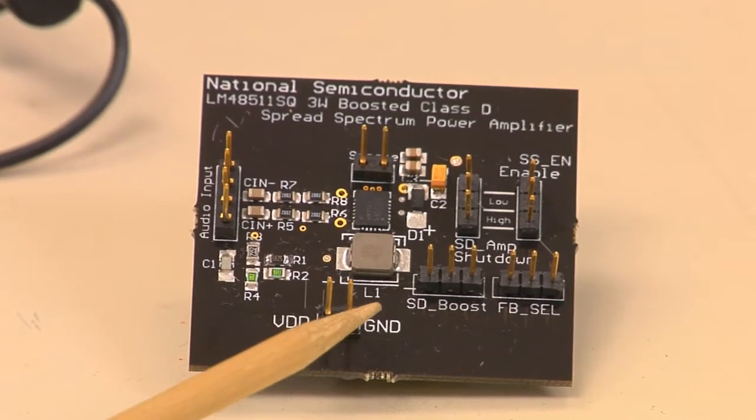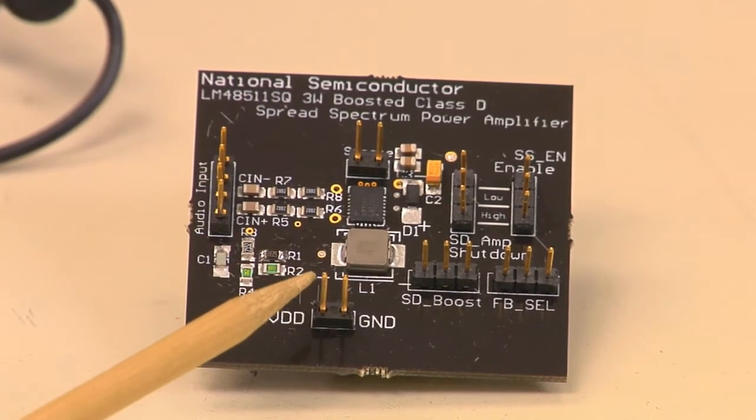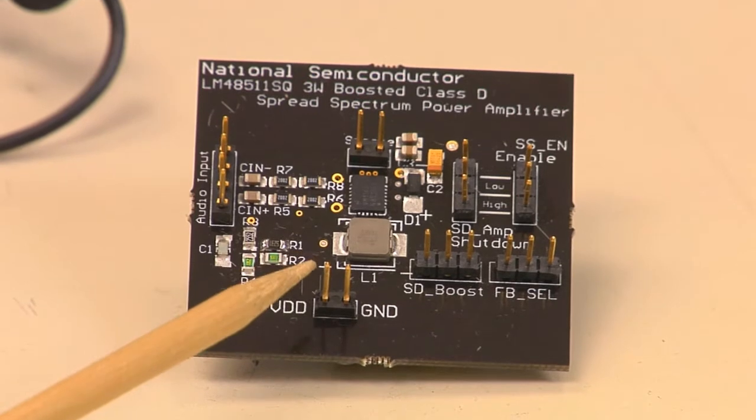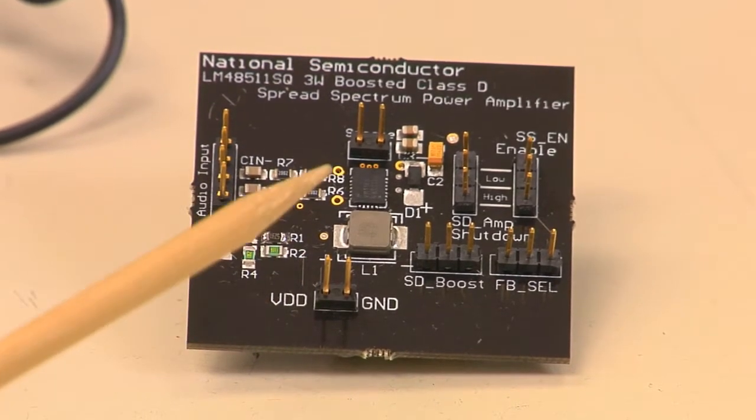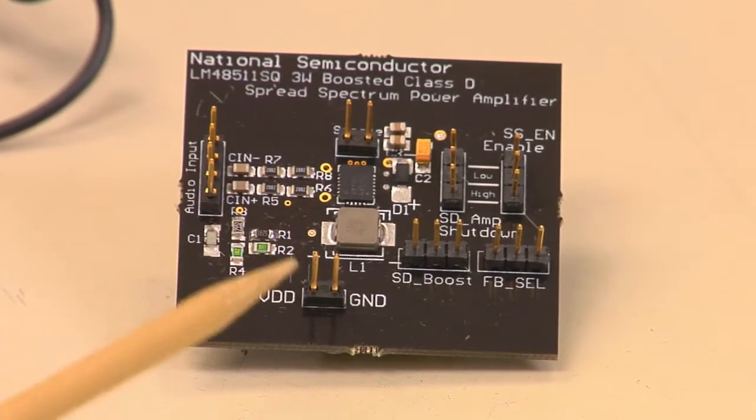There's VDD and ground. For our demonstration today, we're going to be using 4.2 volts VDD, but this part can be ran anywhere from 3 volts to 5.5 volts.